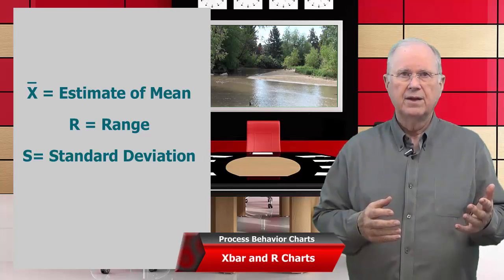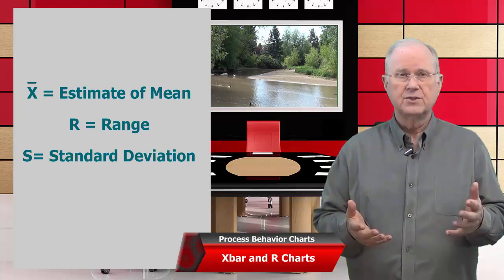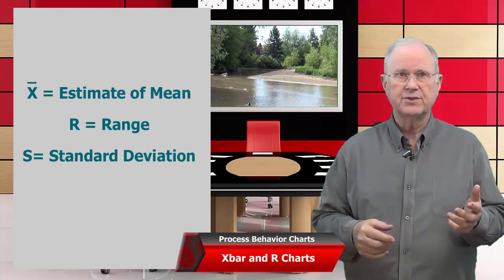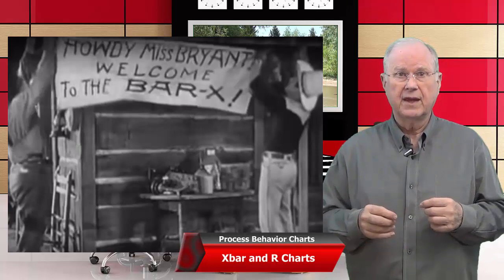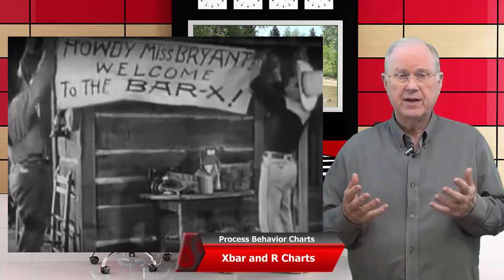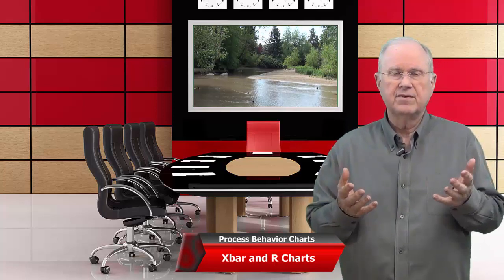We use the symbol X-bar to indicate an estimate of a mean, R to indicate range, and S to indicate standard deviation. So if we're doing X-bar and R, we're doing a chart of means and ranges. Unlike the Individuals and Moving Range charts, X-bar and R charts are based on rational subgroups. The upper chart is the mean of each subgroup and the lower chart is the range. We might have anywhere between two and seven or eight items in each rational subgroup — five is possibly the most common, as it's convenient and easy to deal with.